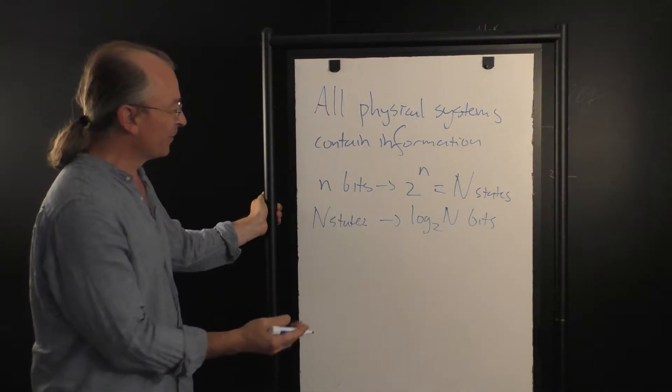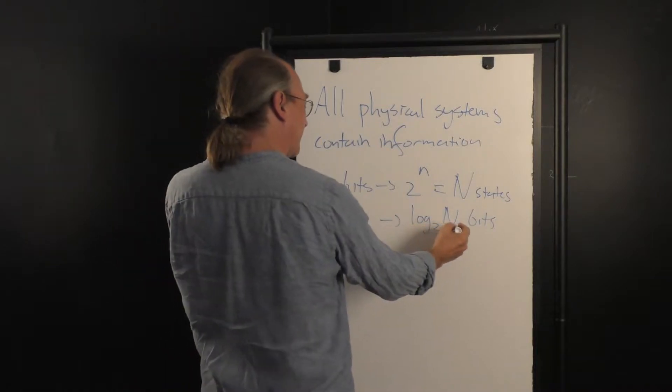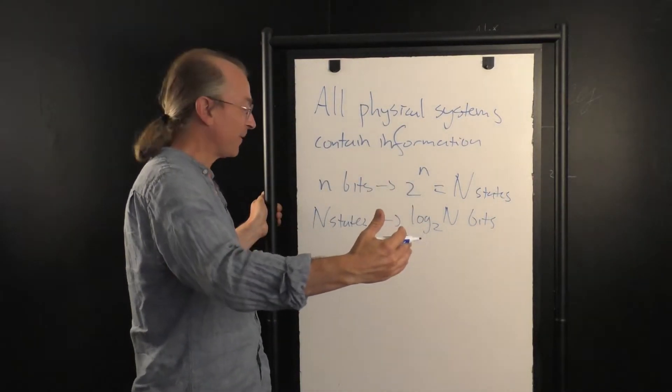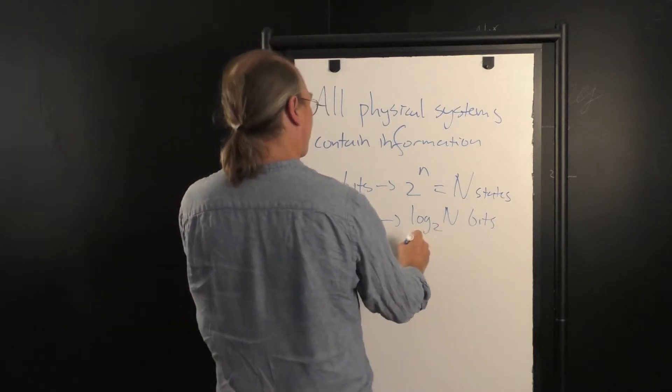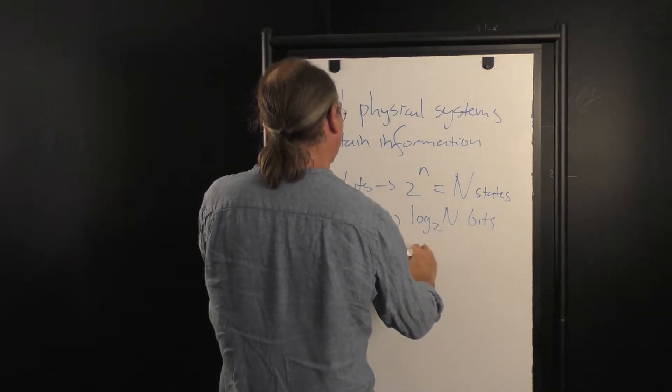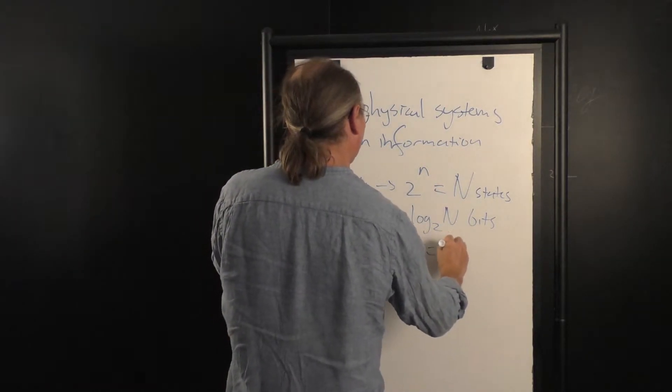So what is the logarithm? The logarithm is basically the total number of bits we need to represent this number. So, for instance, if n is equal to 8, then log to the base 2 of 8 is equal to 3.